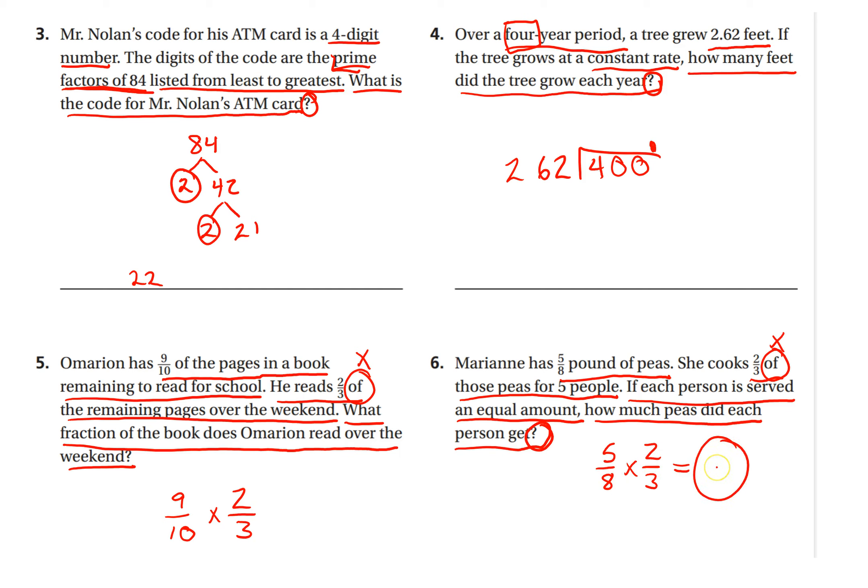Once you have this answer, you have to take that answer, whatever it may be—I'm going to let you do the work on that. And then you're going to have to split it amongst five people. Whenever you're splitting something up amongst people, and they're all getting an equal amount, that's another key word there. That means you're going to be dividing by how many people there are. And then this number will be your final answer. All right. Again, if you have any questions, please raise your hand and see me. Thank you.